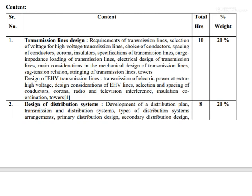The second part covers the design of EHV (Extra High Voltage) transmission lines — what EHV means, its basic design, and what changes are involved. Topics include spacing, corona effect, radio and television interference, insulation coordination, and the design of transmission support and transmission cables. We will study all these parameters and cover the full transmission line design.